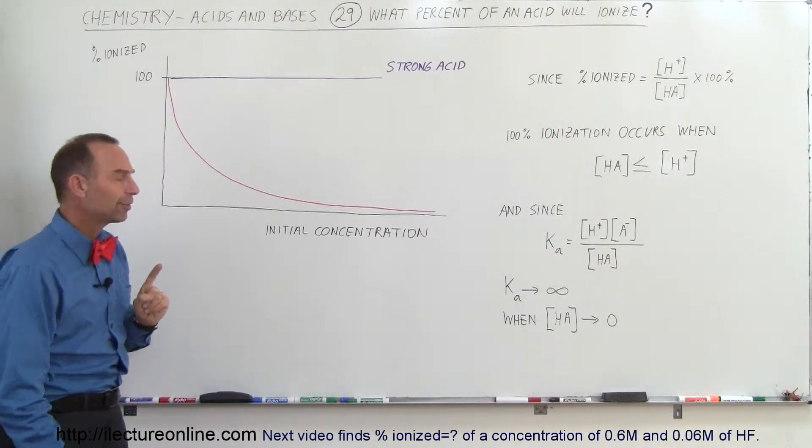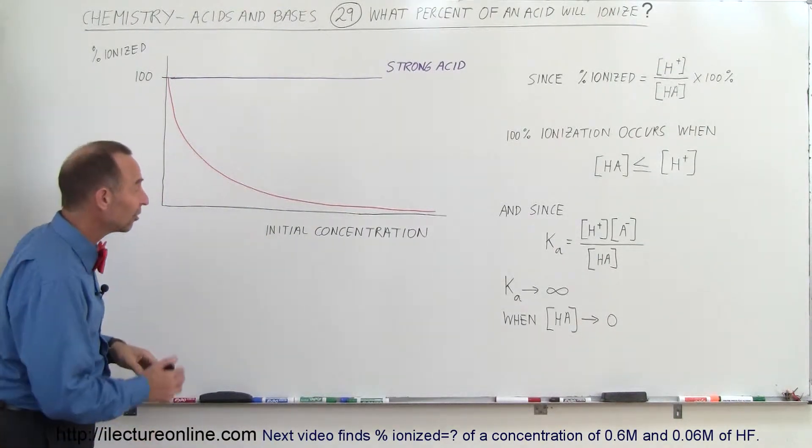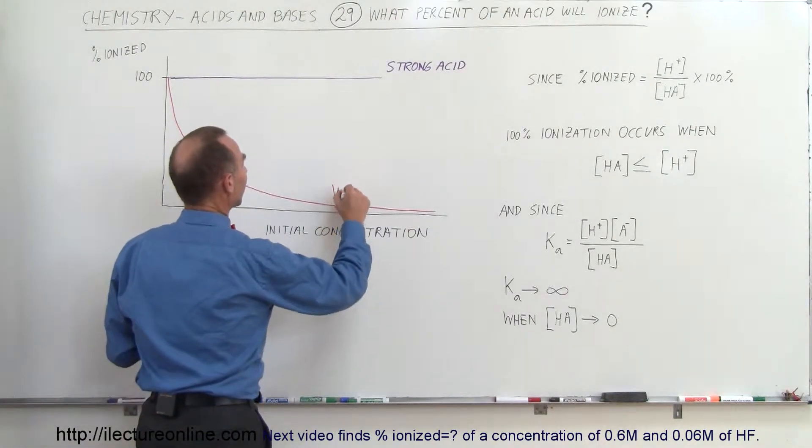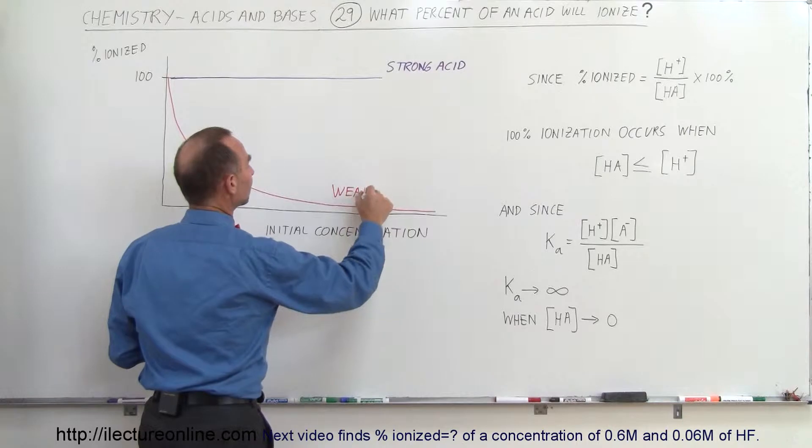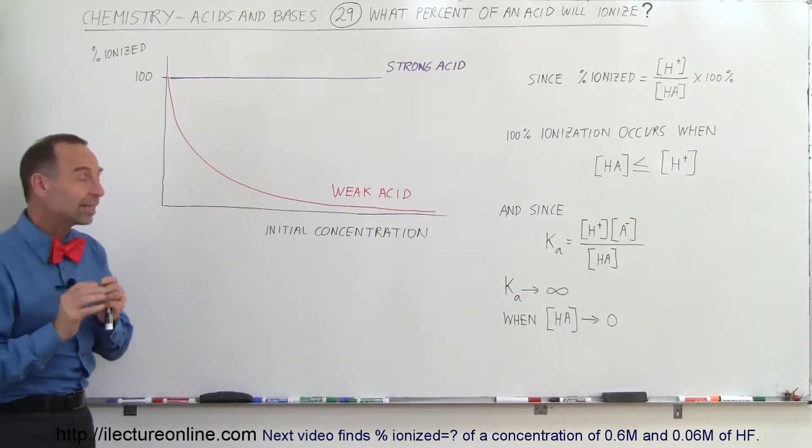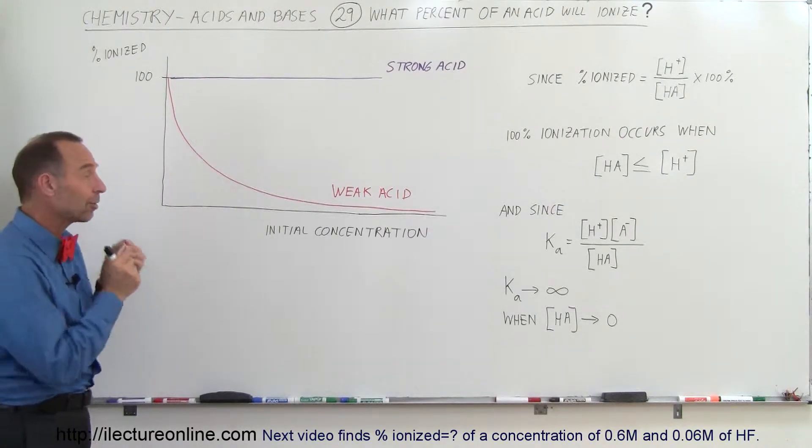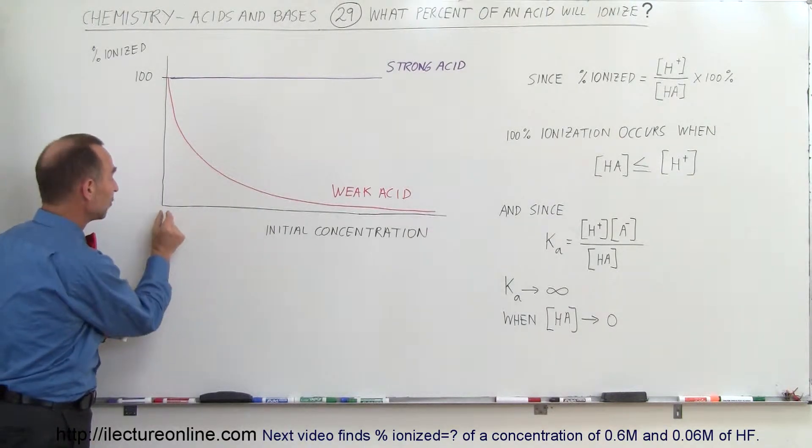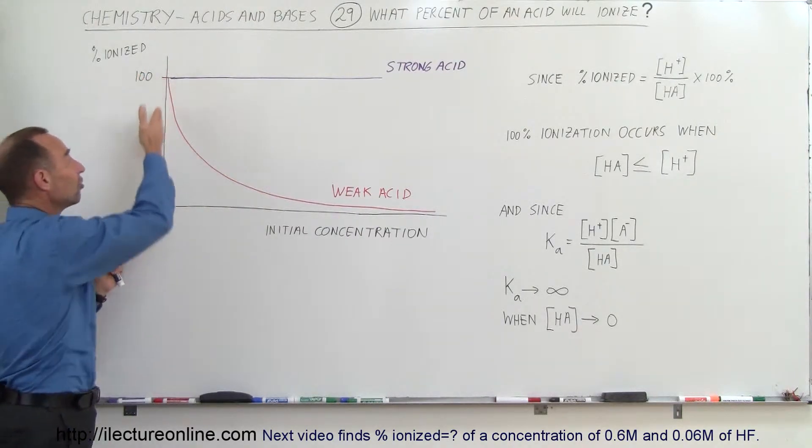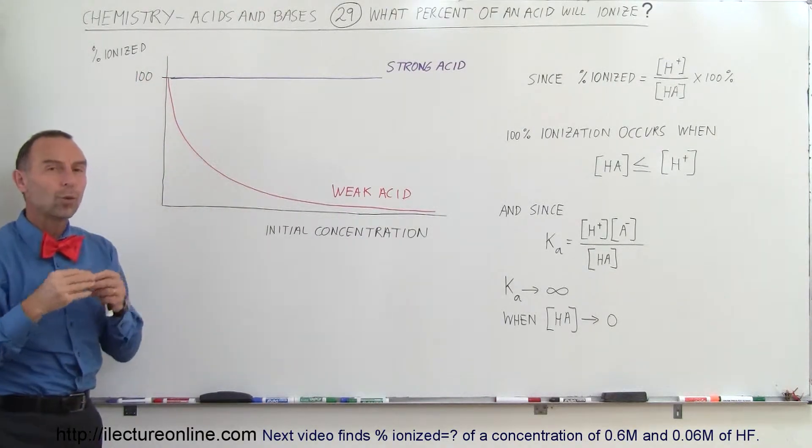For a weak acid, however, that is very different. For a weak acid, it depends a lot. The red line represents a weak acid, and what that means is that the percentage of the ionization that takes place for a weak acid depends on the initial concentration. If there's a very small initial concentration of acid, a very large percentage, as much as 100% of it, will ionize.